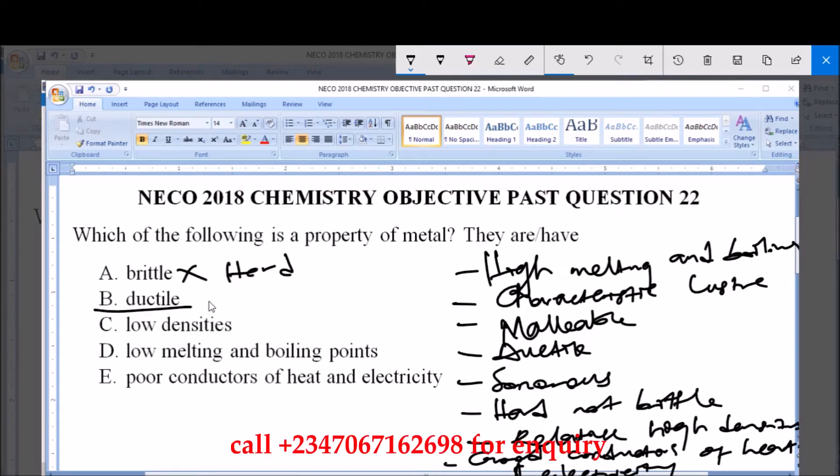Option B says metals are ductile. Yes, metals are ductile, that is they can be drawn into wires. Examples are the cables you see at home.